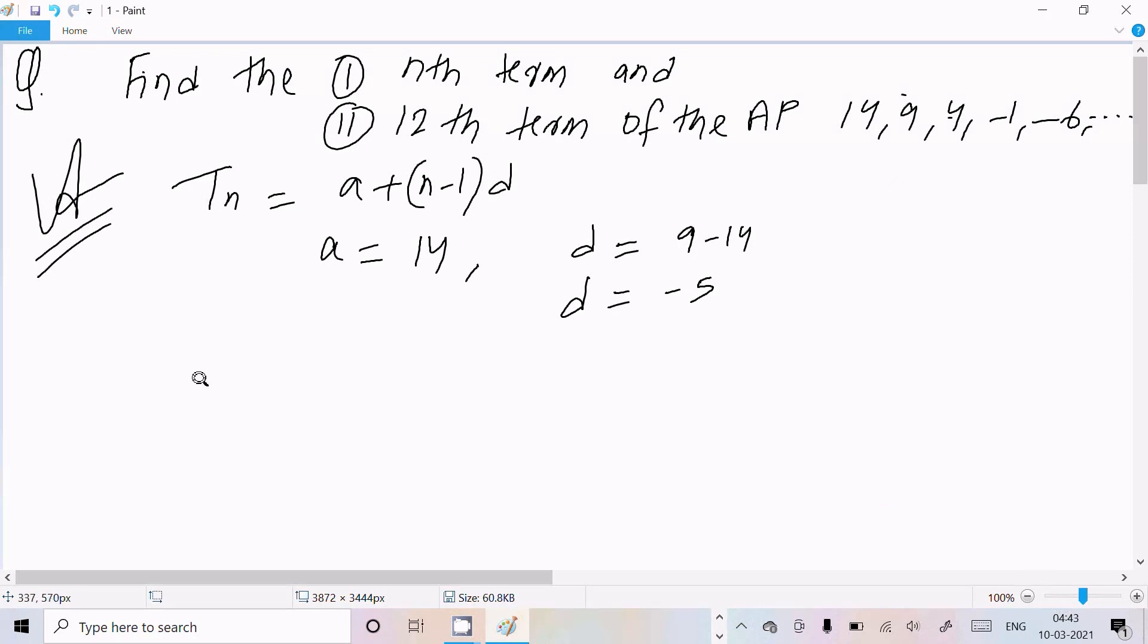So let's calculate nth term. So Tn equal to a plus n minus 1 into d. So here a value is 14, n value is n, and here d value is minus 5.